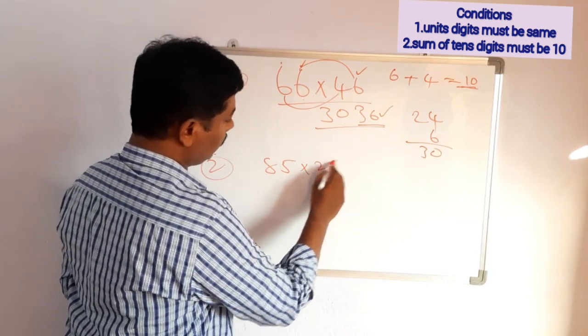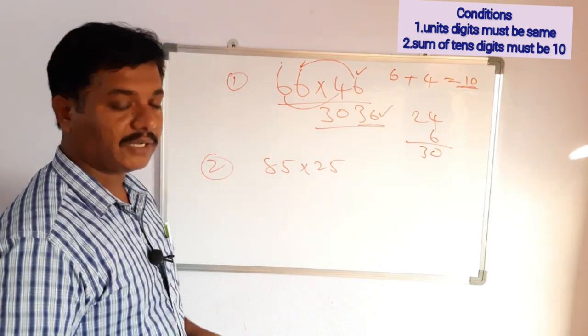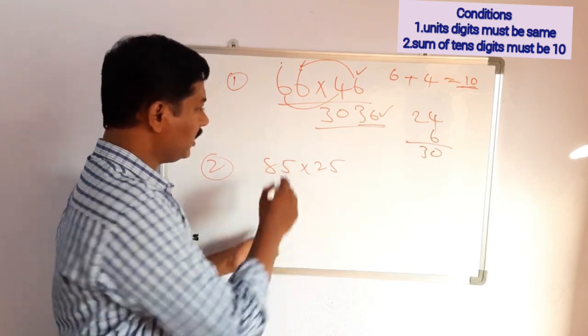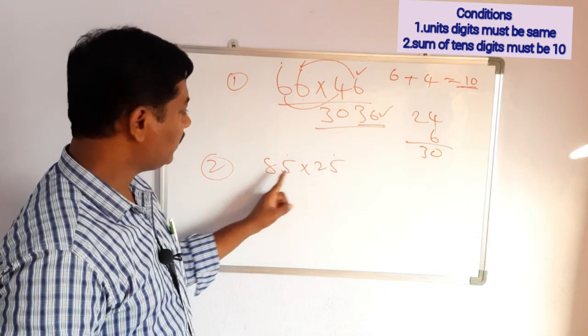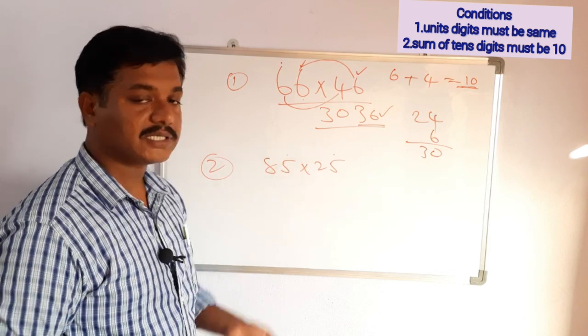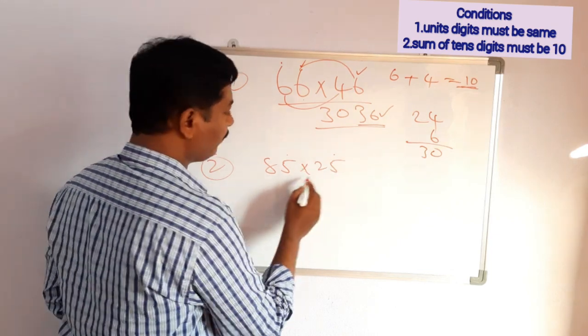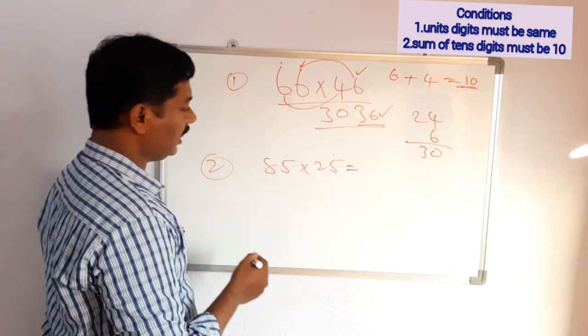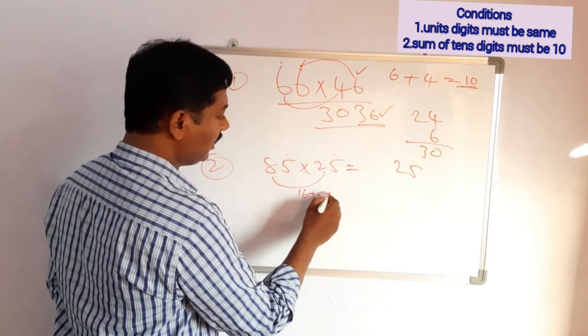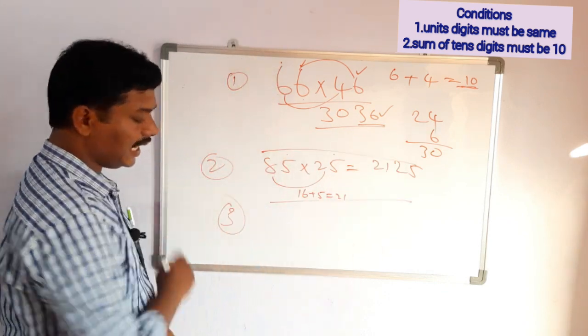85 times 25. Just see, is this product fulfilled with the required two conditions or not? First condition, the units digit must be same. Here 5, 5, both are same. Next, 8 plus 2, the tens digit. The digits which are in the tens place, the sum must be 10. 8 plus 2 equals 10. Two conditions fulfilled. So we can apply the trick here. 5 times 5 is 25. Next, 8 times 2 is 16 plus 5, that is 21. So 2125 is the answer.